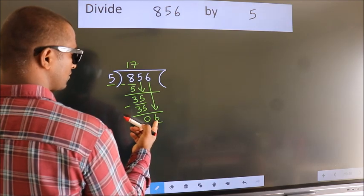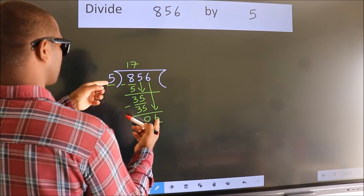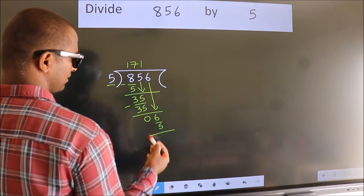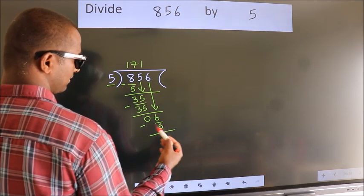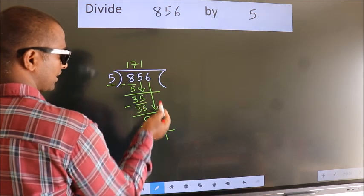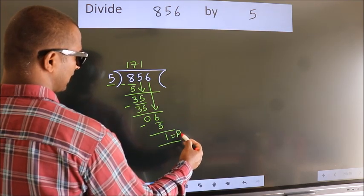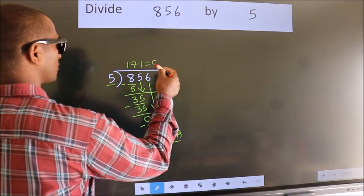A number close to 6 in 5 table is 5 once 5. Now we subtract. We get 1. No more numbers to bring it down. So we stop here. This is our remainder. This is our quotient.